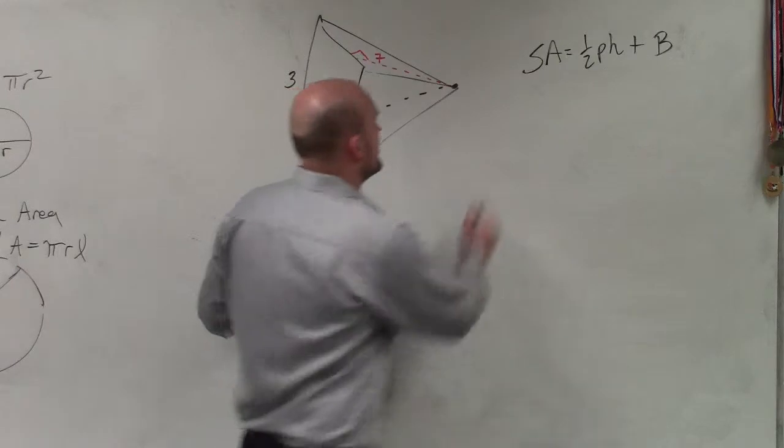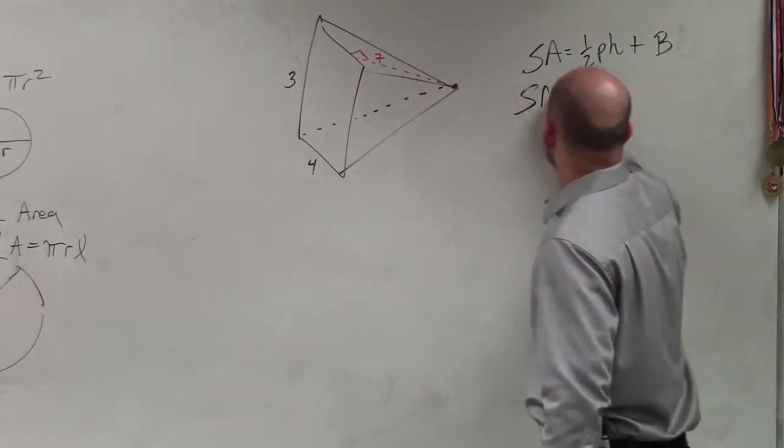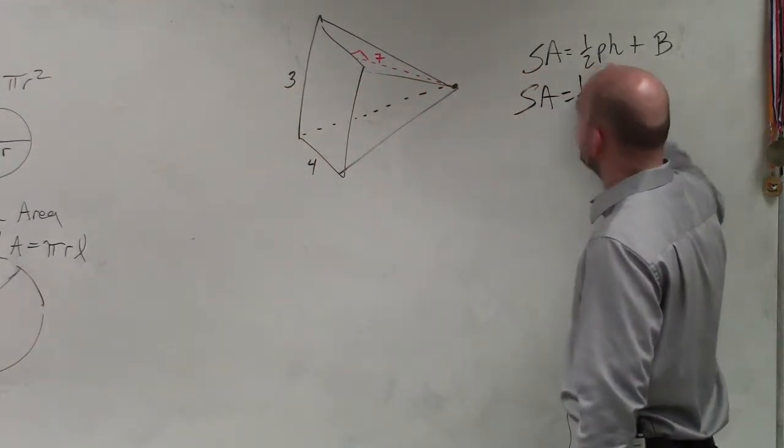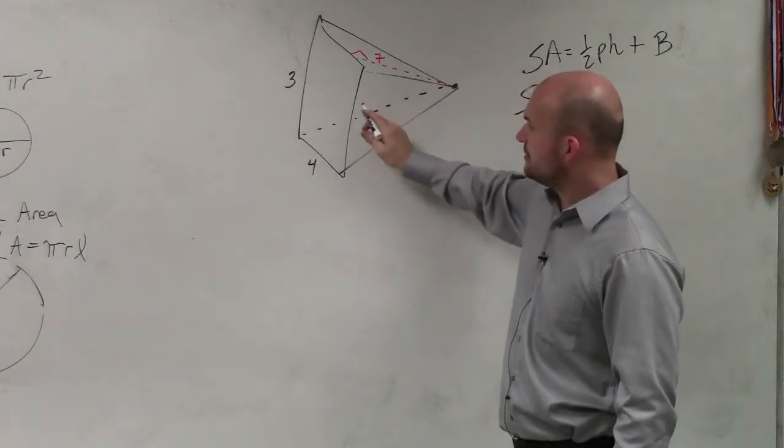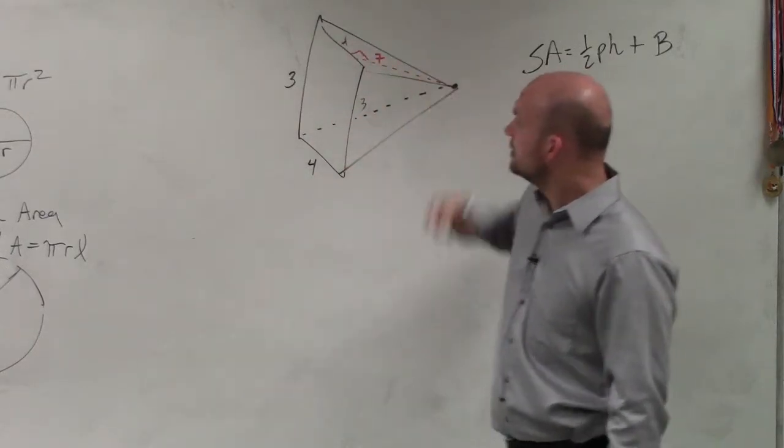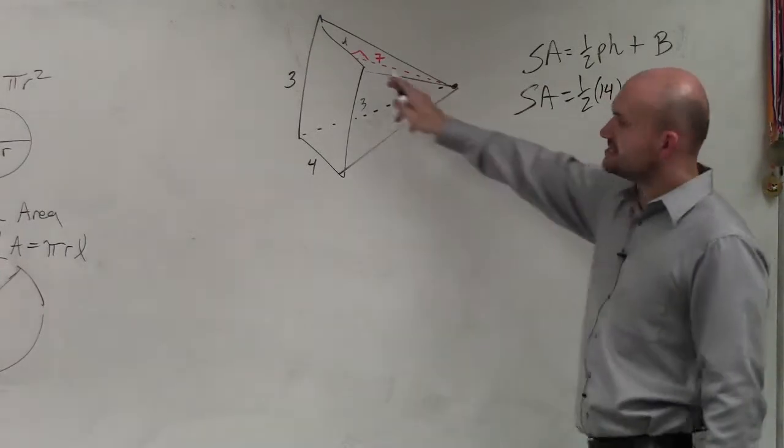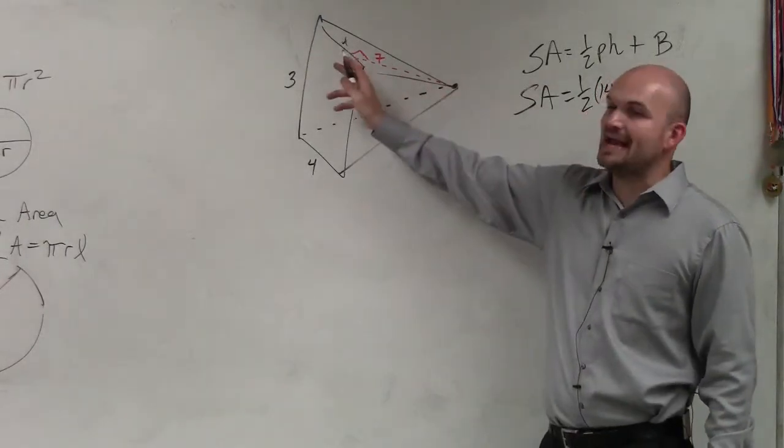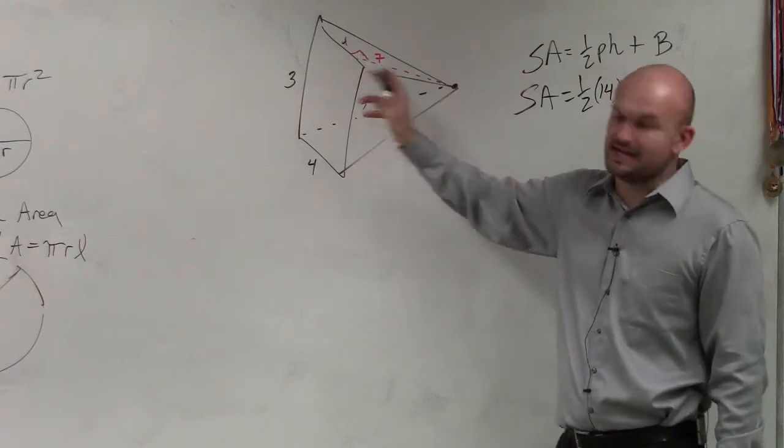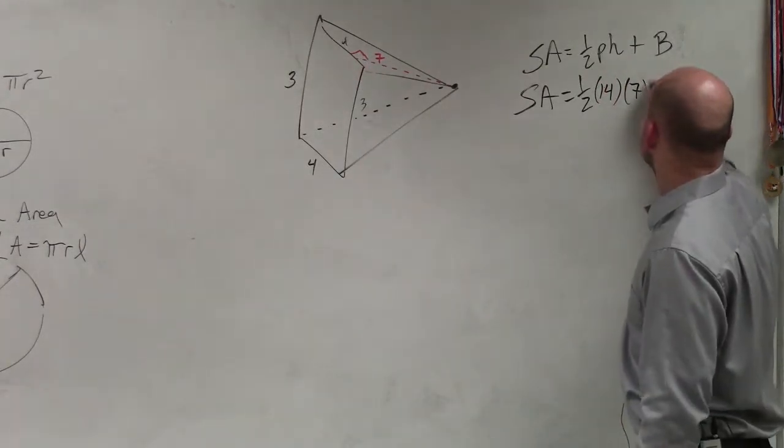So we go ahead and look at surface area equals one-half perimeter. Well, if that's 3, that's 3. If that's 4, that's 4. So therefore, our perimeter is 14. You guys can see that the distance from the top to that edge is 7. That's the slant height plus the area of the base.